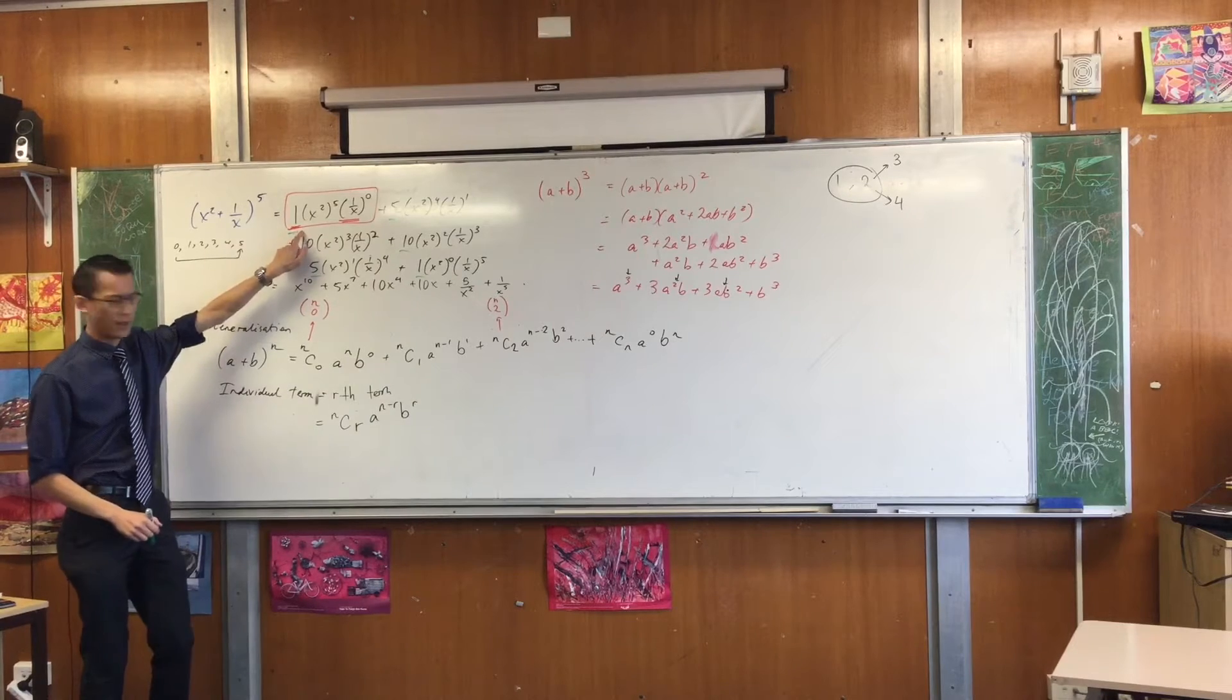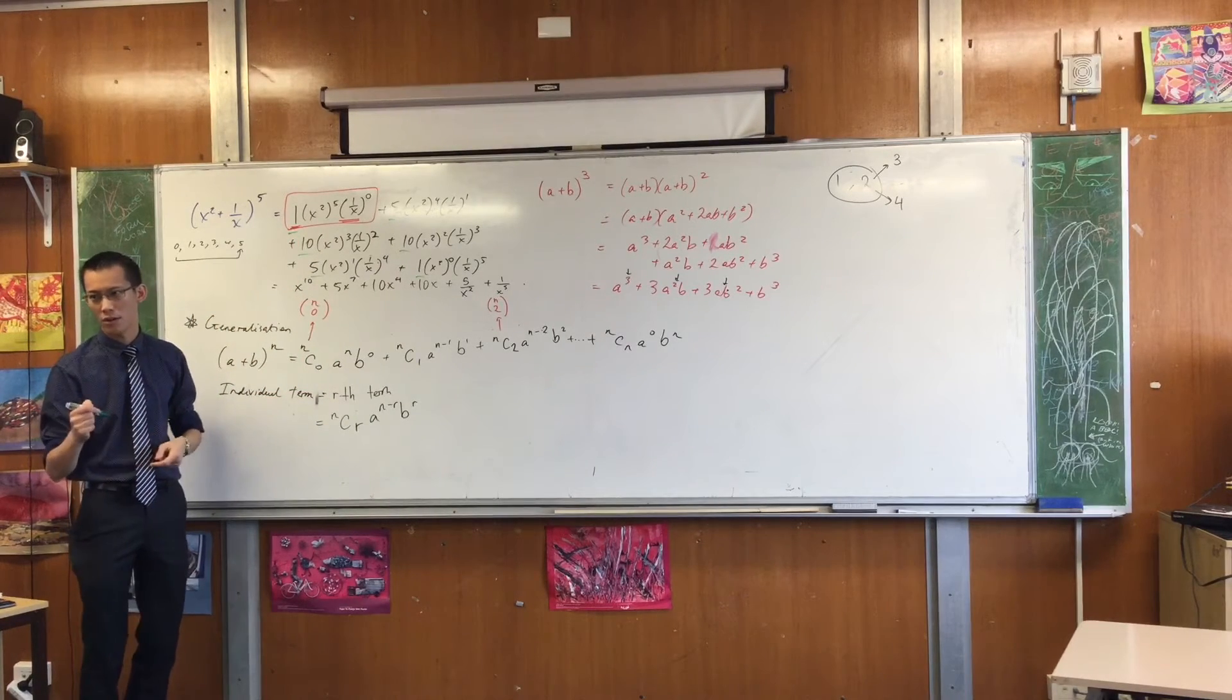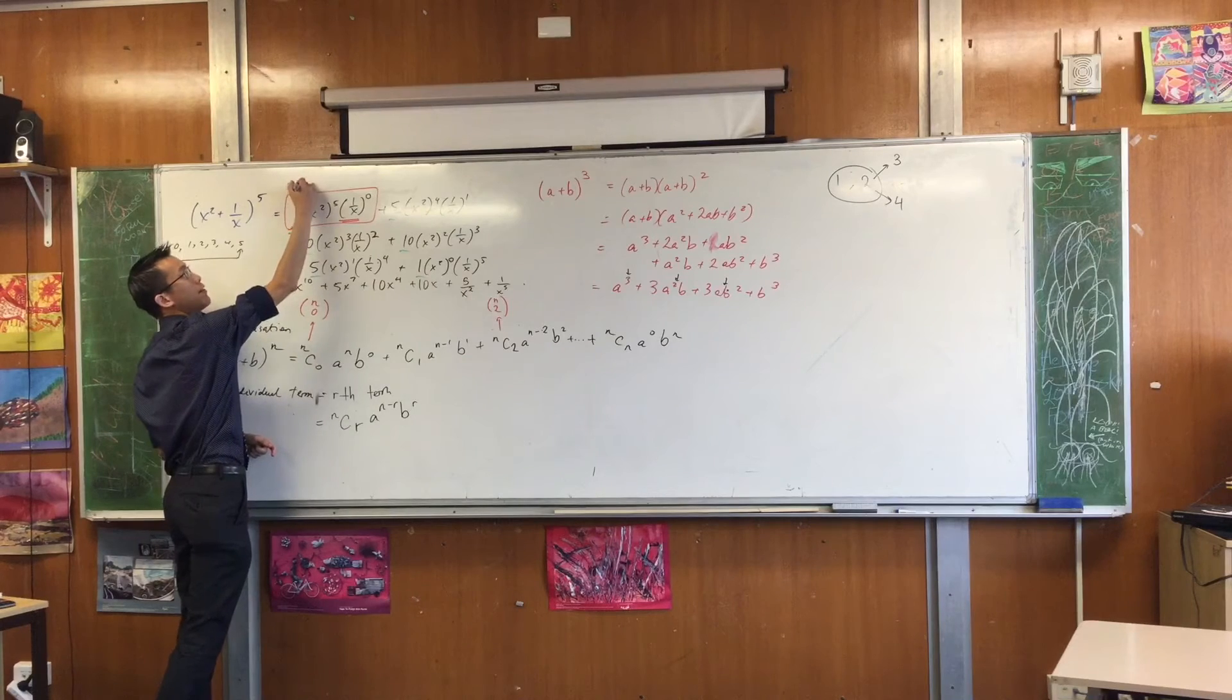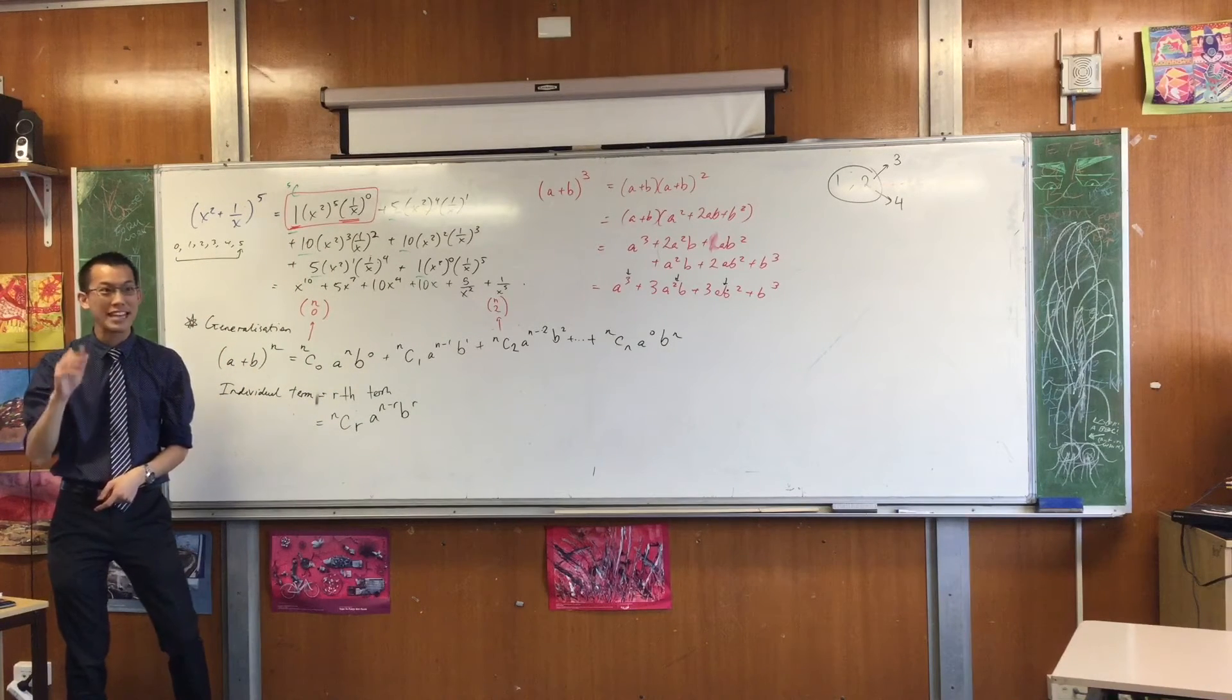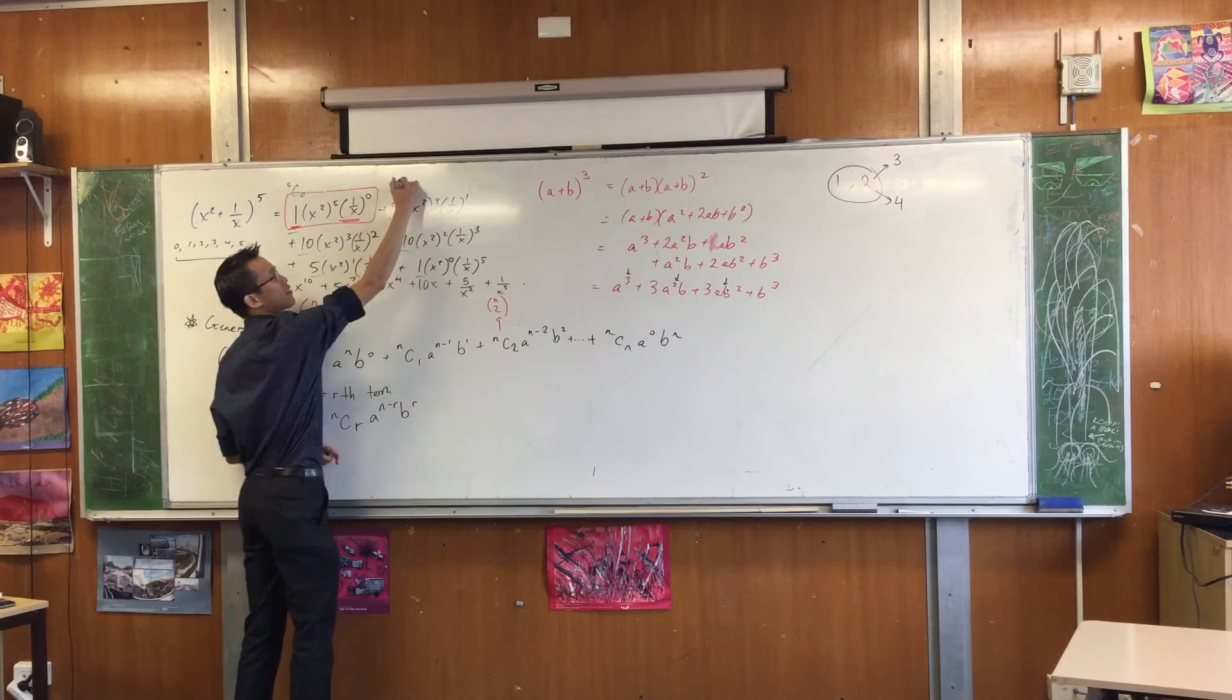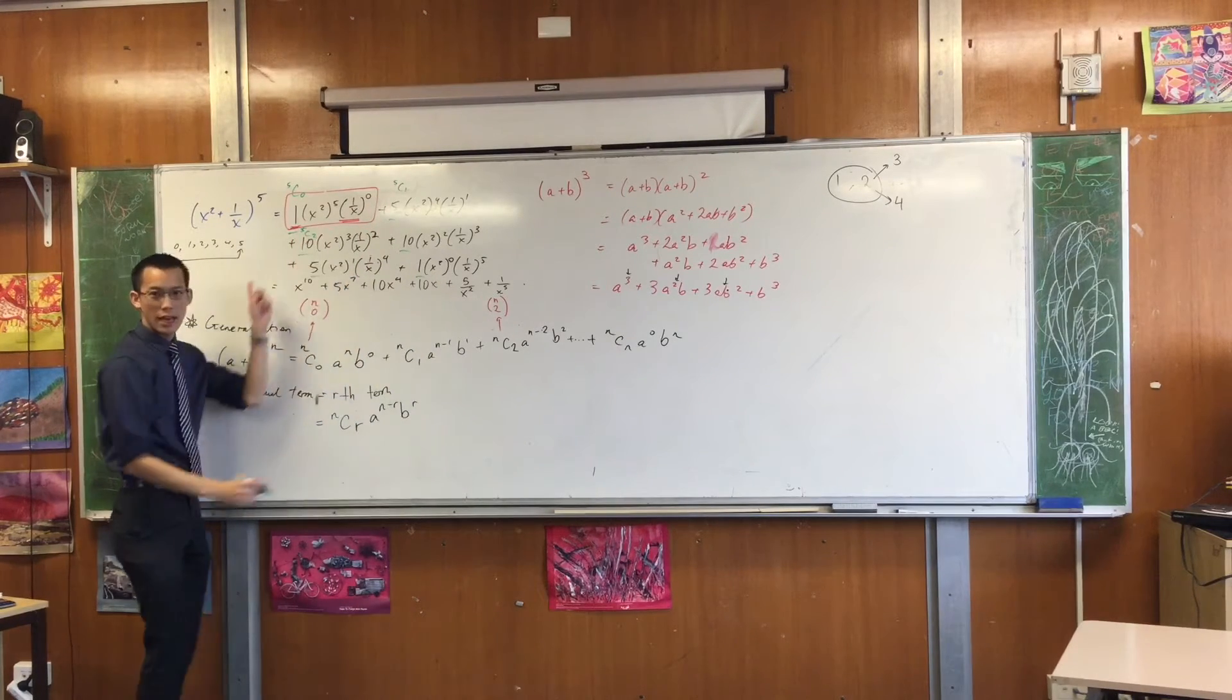This one here, how does it fit into this scheme? Which row of Pascal's triangle am I on? For this particular example. The fifth row, right? So this number here would be 5C, which term is it? It's the, careful, it's the zeroth term. I know it's a little bit weird, but 5C0 is the way we'd say that. That means this is 5C1 and 5C2 and so on.